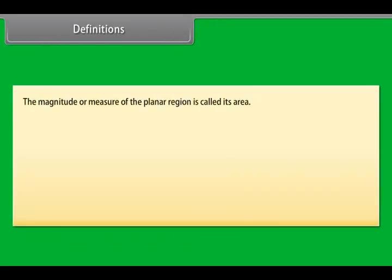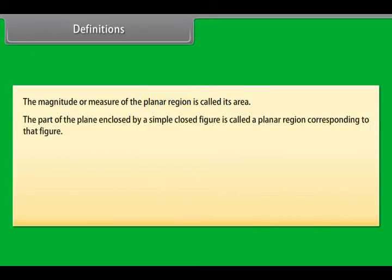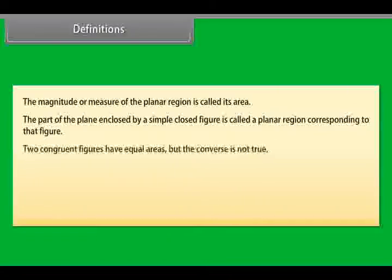Students, the magnitude or measure of the planar region is called its area. The part of the plane enclosed by a simple closed figure is called a planar region corresponding to that figure. Two congruent figures have equal areas, but the converse is not true. The area of a figure can also be denoted by AR. For example, figures on the same base.